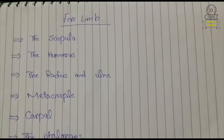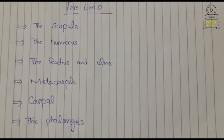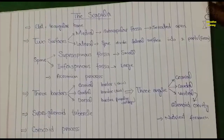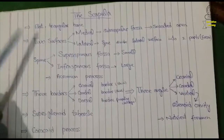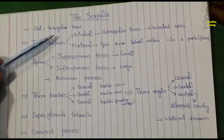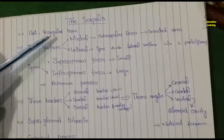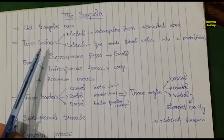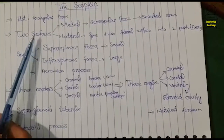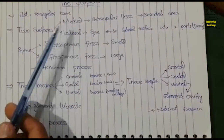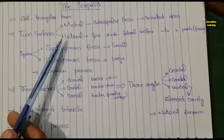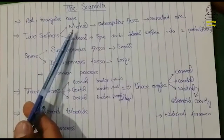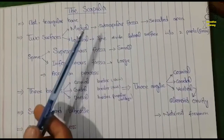The fourth bone is the metacarpal, the fifth is the carpal, and the sixth are the phalanges. Today we will discuss only the scapula bone. The scapula bone is a flat and triangular bone, having two surfaces: the medial surface and the lateral surface.